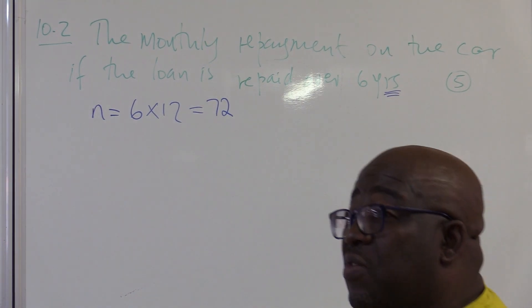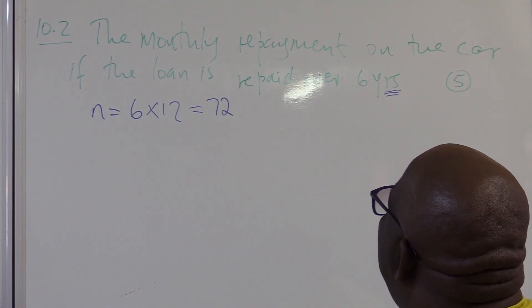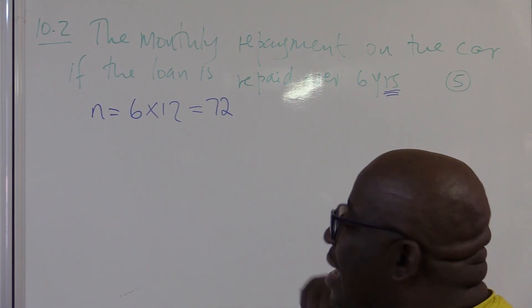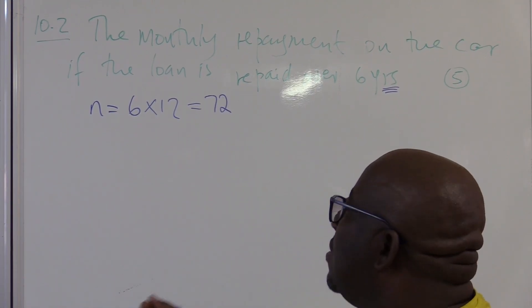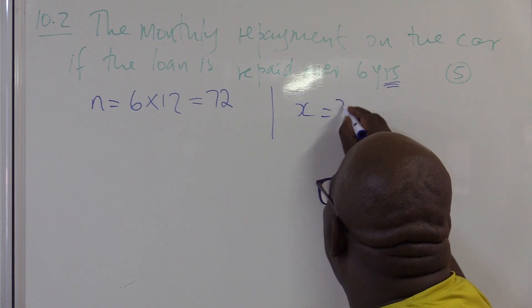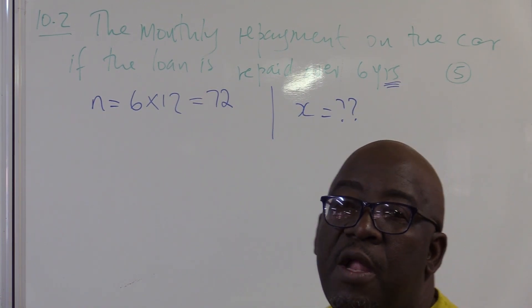So, my N in this case will be 72 months. The monthly repayment on the car if the loan is repaid over six years. What are the monthly installments, the monthly repayments in this particular case? That is X. This is what we're looking for. We're looking for X.